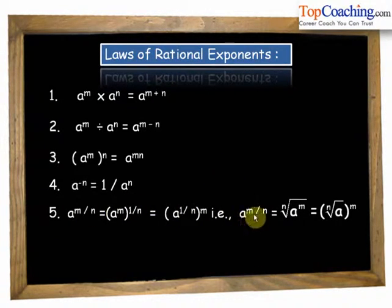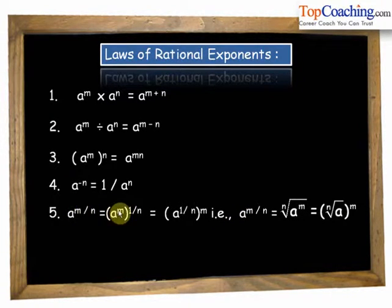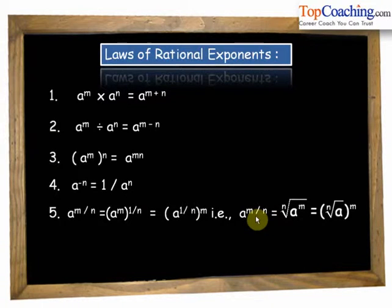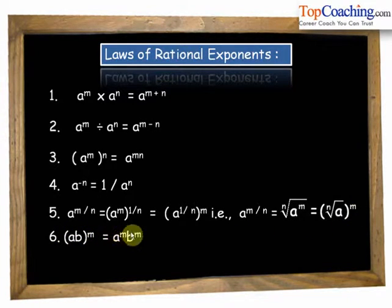That is, a to the power of m by n equals the nth root of a to the power of m. Since m by n equals m into 1 by n, we can write this as a to the power of m whole to the power of 1 by n, and these two powers can be interchanged. So a to the power of m by n equals the nth root of a to the power of m. The sixth law is ab to the power of m equals a to the power of m into b to the power of m — the same as integral exponents.